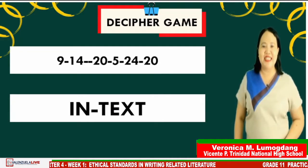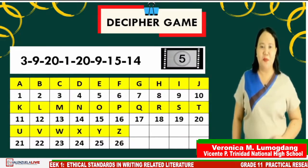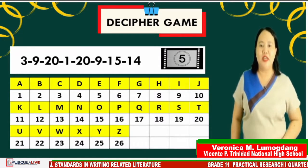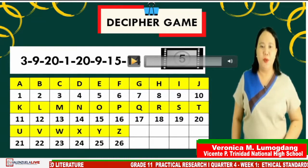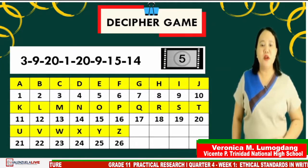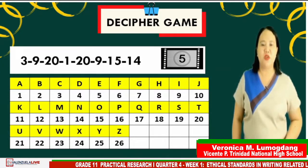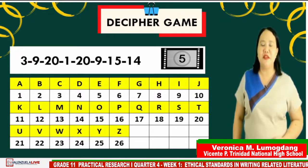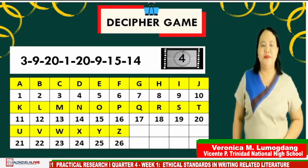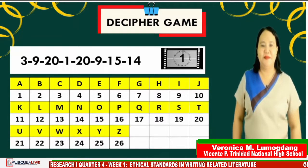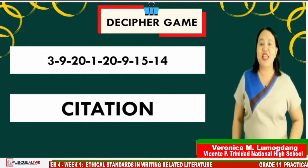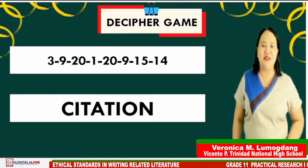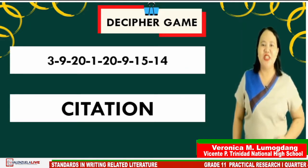Second set of numbers are 3, 9, 20, 1, 20, 9, 15, and 14. Clue: this is a way of recognizing the original source of information. Timer starts now! If your answer is 'citation,' you are correct! Wow, grade 11 students, you are amazing!